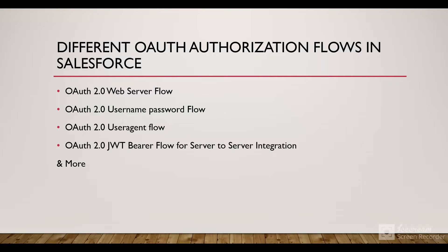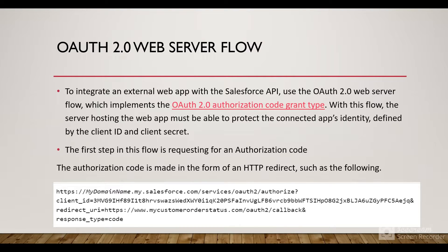In this video we will see a demo of the OAuth 2.0 web server flow. I've already made a demo for the username-password flow in another video — I'll share the link here. We also have the user agent flow, and if we need to communicate between two different servers instead of involving a user, we use the JWT flow. JWT stands for JSON Web Tokens and is used for server-to-server interaction.